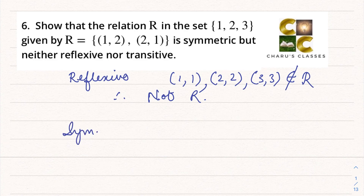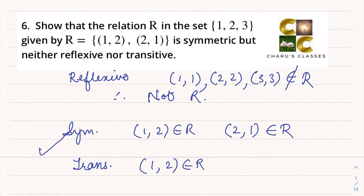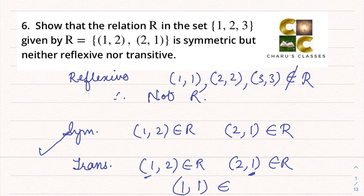Let's check for symmetric. Here (1, 2) belongs to R and we can see (2, 1) is also belonging to R, therefore this is a symmetric relation. Now let's check for transitive. If (1, 2) belongs to R and (2, 1) belongs to R, then for transitivity (1, 1) must also belong to R, but (1, 1) is not belonging to R, therefore it is not transitive.